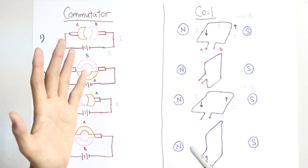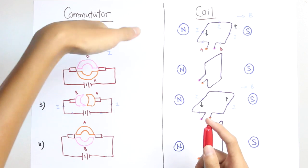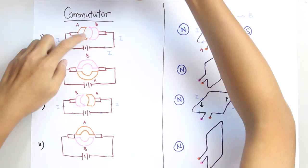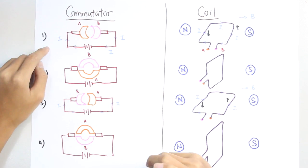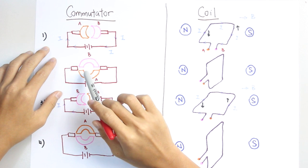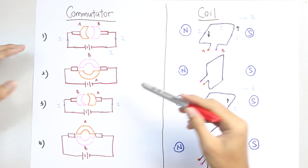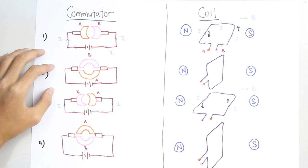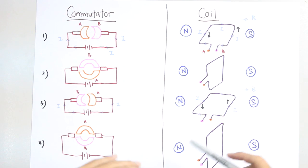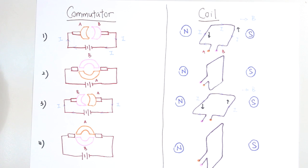After the coil has rotated anti-clockwise, A will turn down here and B will be up here. At this position, because of the gap between the two semicircles, the carbon brushes have totally no contact with the commutators. So at this position, no current flows through. Because of inertia, it will continue its anti-clockwise motion.